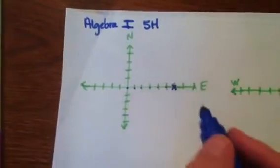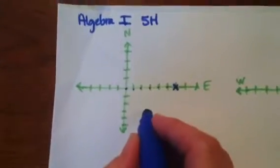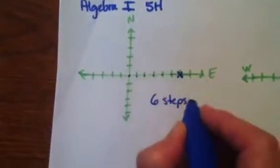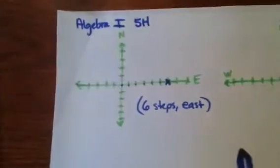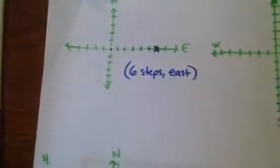It says, describe its vector by giving magnitude. Magnitude is, how many steps did he take? Well, he went six steps. And which direction did he go? He went east. So this is exactly the answer they're wanting. They're wanting the direction and the magnitude right there.